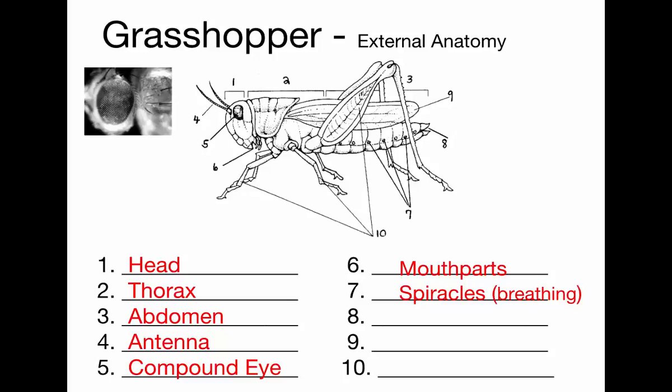Number eight, at the very end of this female grasshopper, is the ovipositor — the part that releases eggs during reproduction. After mating, the female can hold sperm inside the abdomen and use those sperm cells to fertilize her eggs as she lays them. Number nine is the wings — some arthropods have wings, some do not. And finally, number ten is the legs — insects all have six legs.